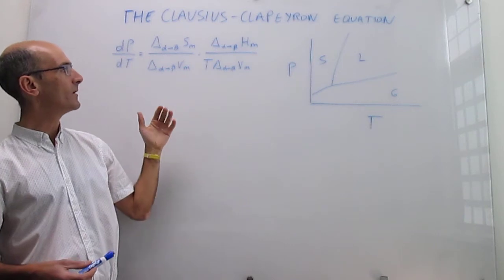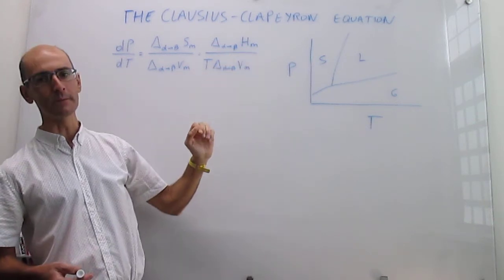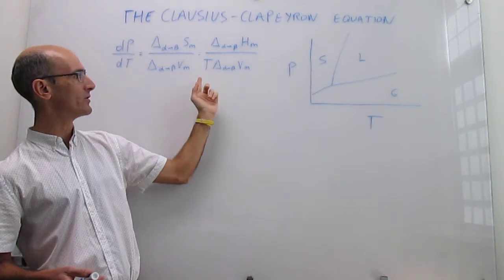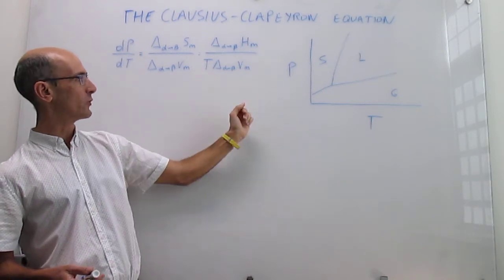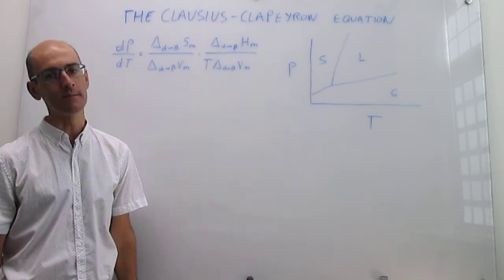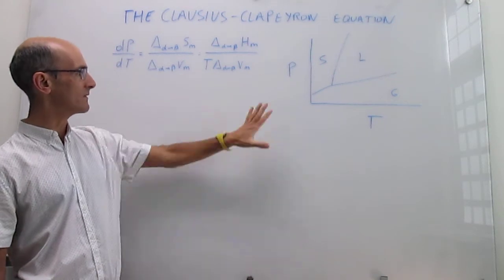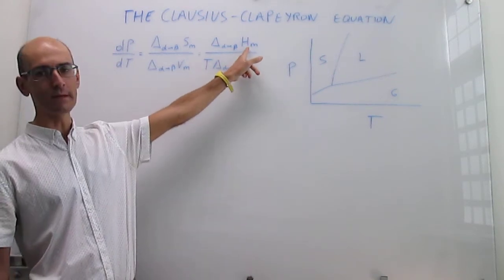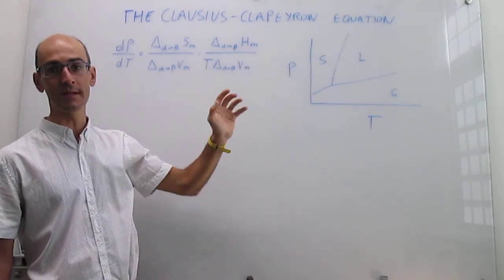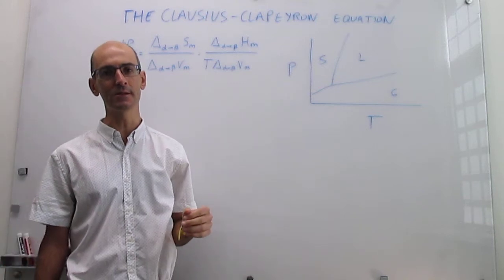More conveniently, the Clapeyron equation can be written as the change in enthalpy of the phase transition divided by the temperature at which you are working and the change in molar volume at that phase transition. This form is more convenient because enthalpies are generally available in tables for phase transitions.